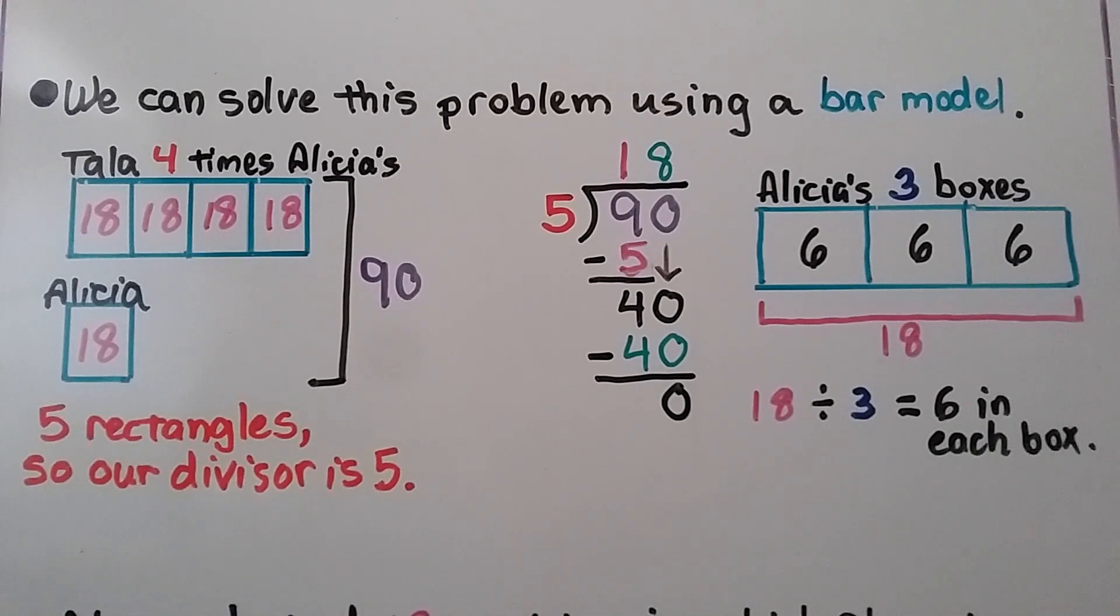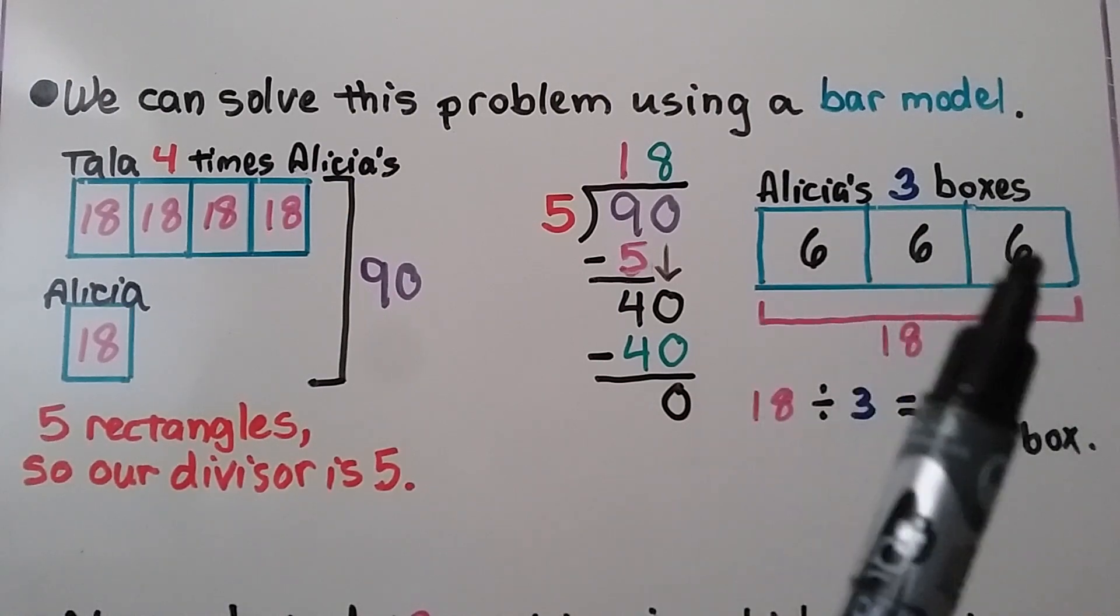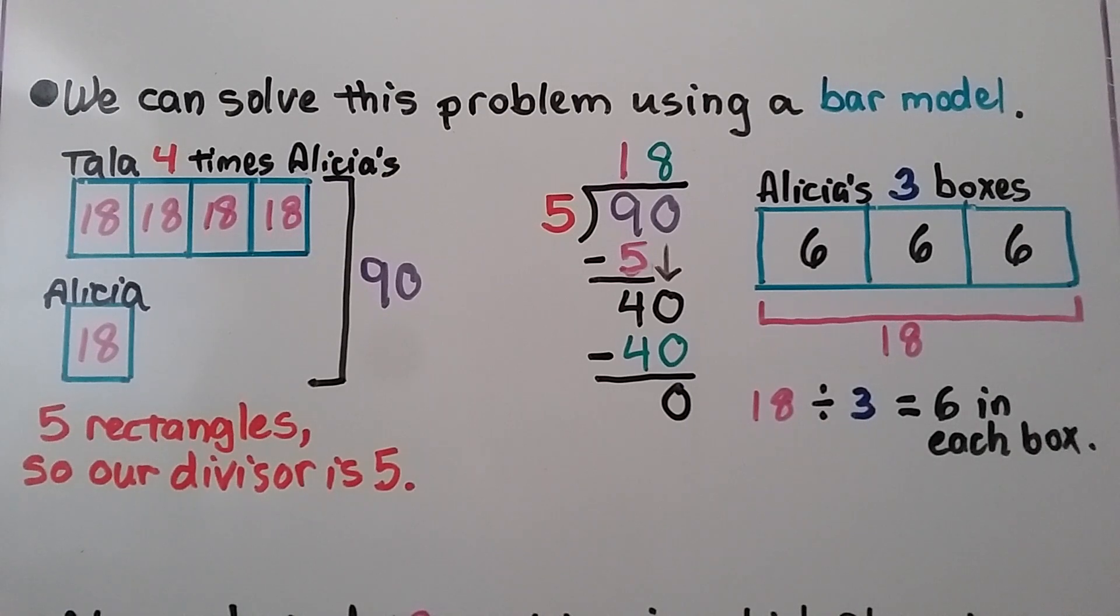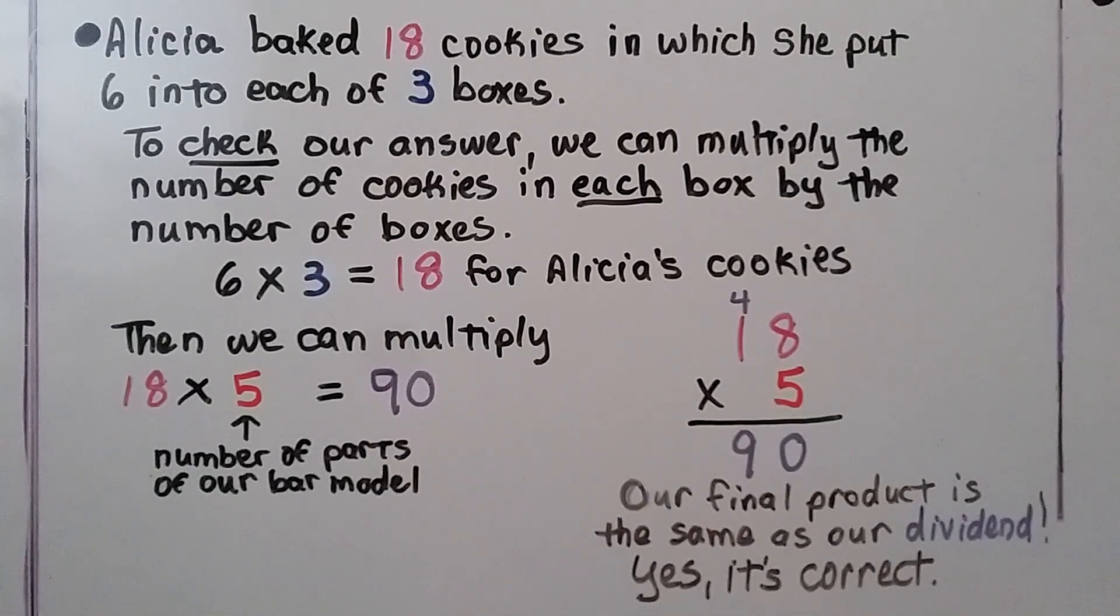We know that Alicia baked 18 cookies. And she needs to divide them into 3 boxes. We can make a bar model representing 18 in all, and making 3 rectangles for the 3 boxes. 18 divided by 3 is equal to 6 in each box. Alicia baked 18 cookies in which she put 6 into each of 3 boxes.